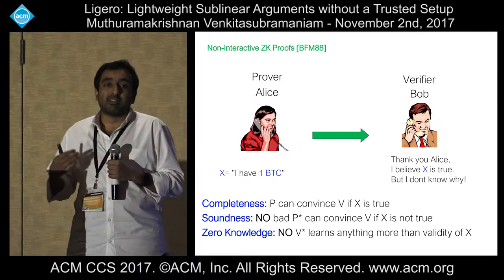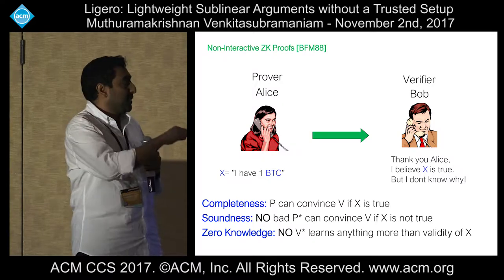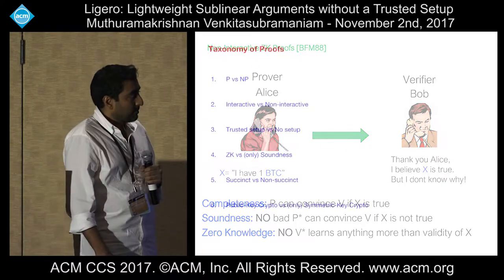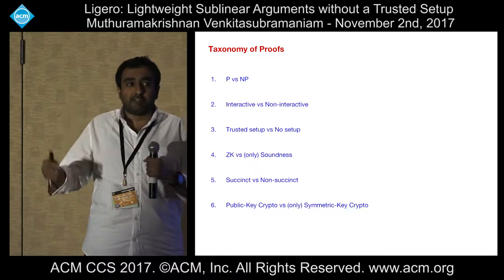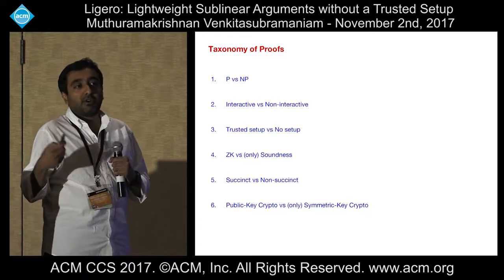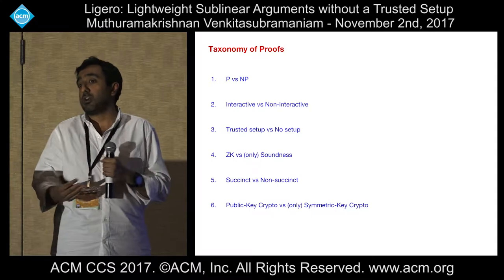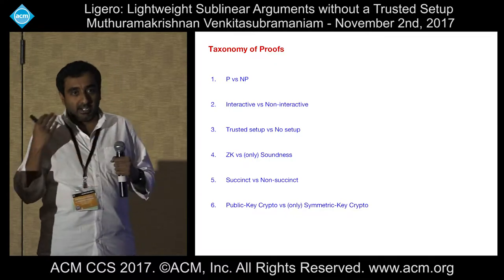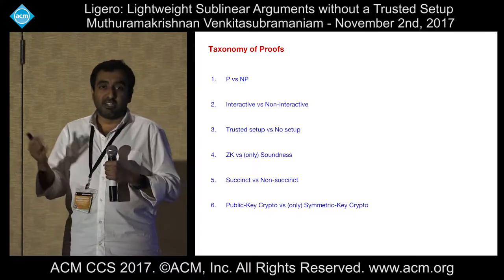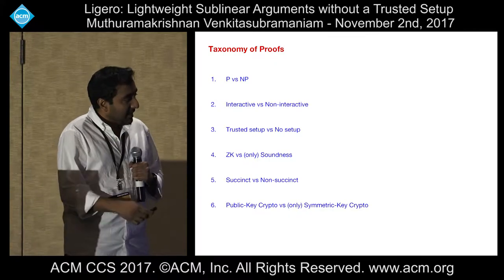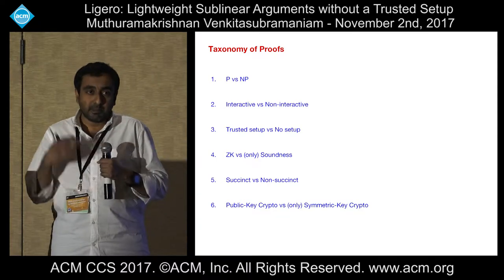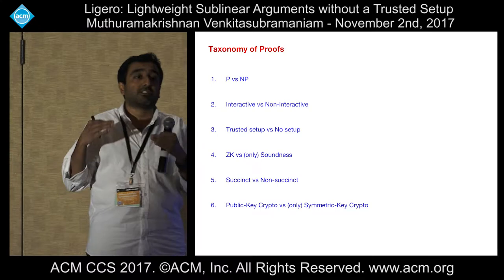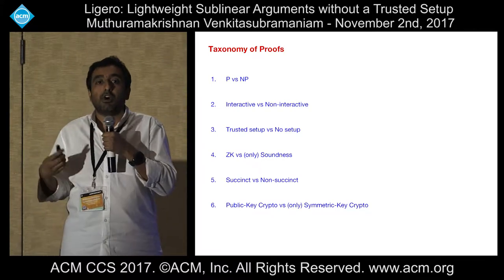A variant of zero-knowledge proofs restricts the prover to send a single message from the prover to the verifier. This is slightly different from the previous talk where interaction was allowed. There are different flavors of proofs. A proof can be for just deterministic computation, P versus NP. The previous talk was specifically for deterministic computation. But NP is typically more desirable, especially in zero-knowledge. Interactive versus non-interactive — non-interactive is typically preferable in applications like blockchains and signatures. Another distinction is trusted setup versus no setup, which I'll talk about a little bit later.